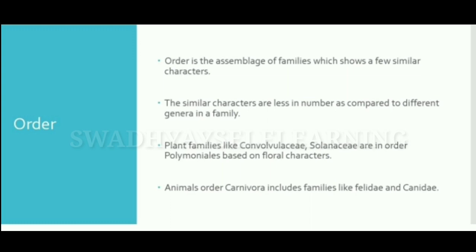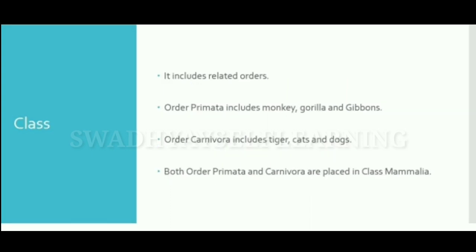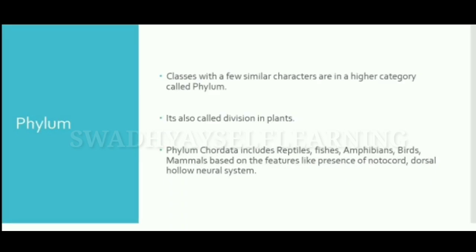The animal order Carnivora includes families Felidae and Canidae, that is cats and dogs. Class includes related orders. Order Primates includes monkey, gorilla, and gibbon. Order Carnivora includes tigers, cats, and dogs. Both order Primates and order Carnivora are placed in class Mammalia.